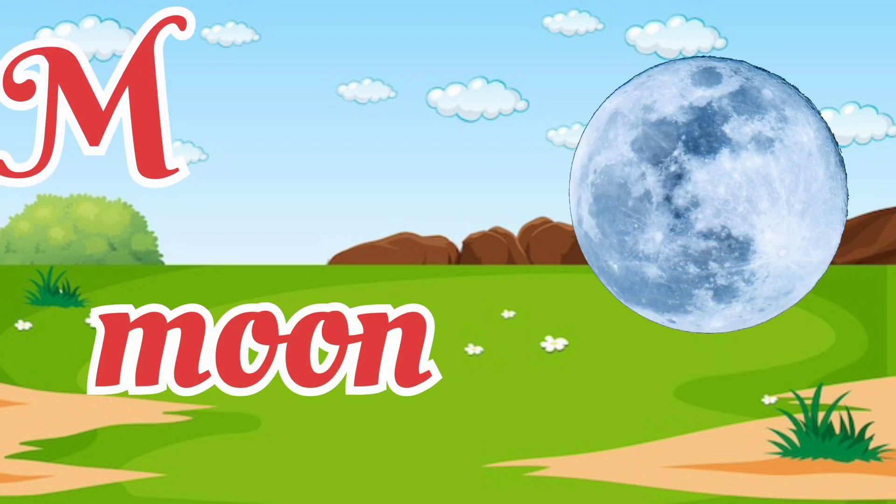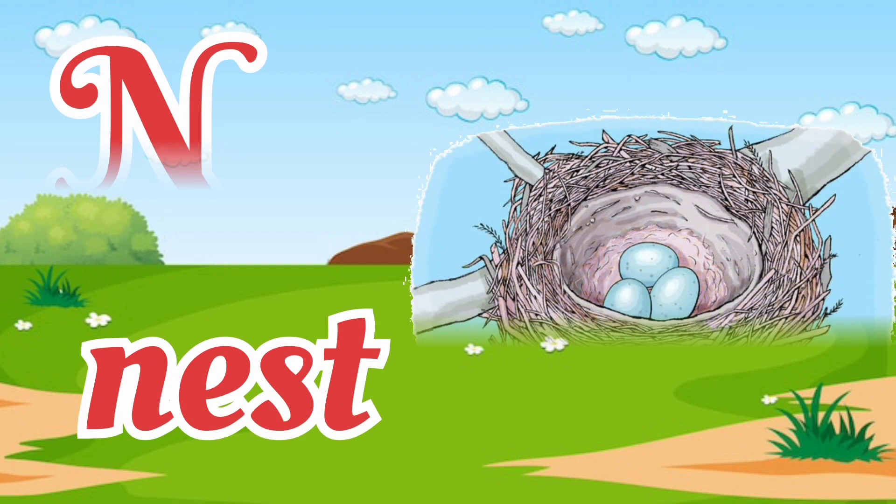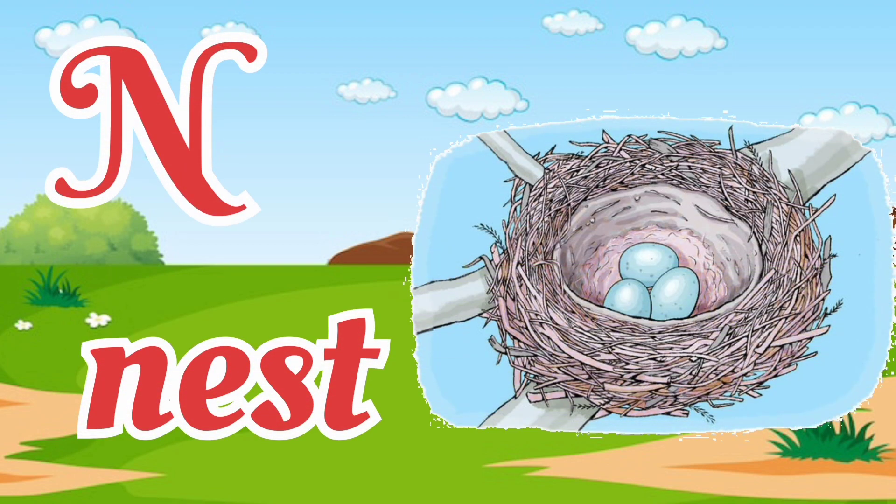M for moon. Moon means chandrama. N for nest. Nest means ghosla.